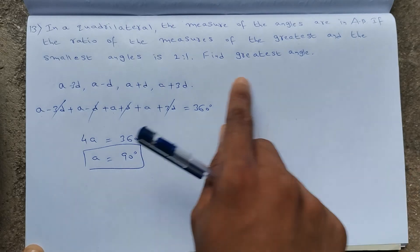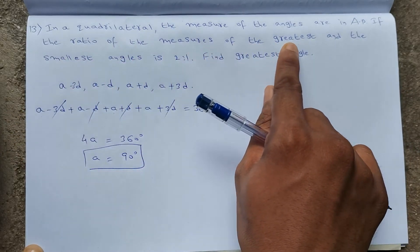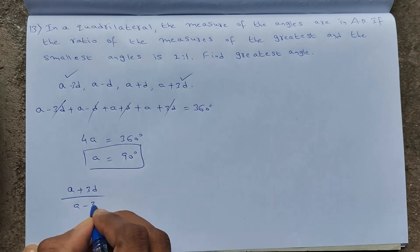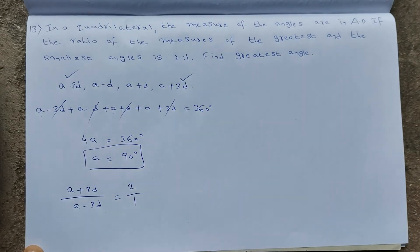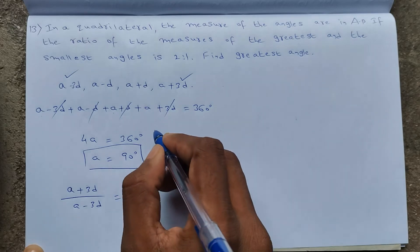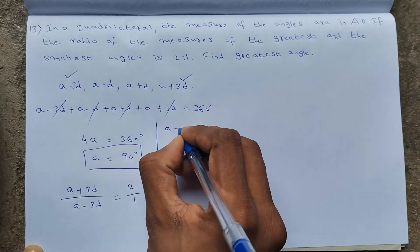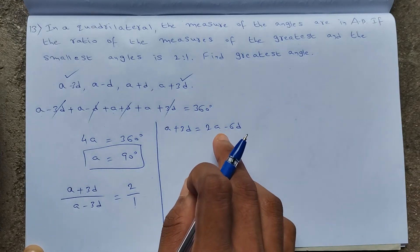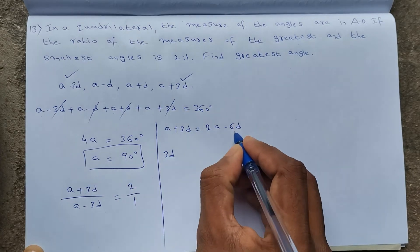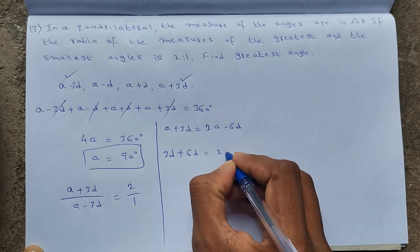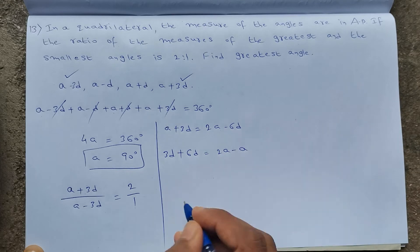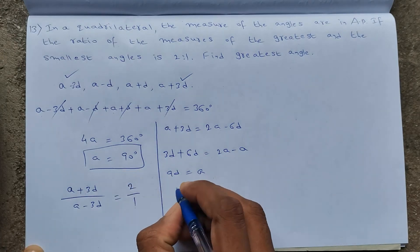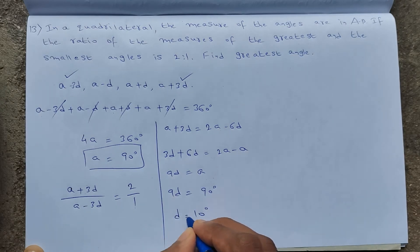Using the second condition — greatest angle / smallest angle = 2/1 — gives (A + 3D)/(A − 3D) = 2/1. Cross-multiplying: A + 3D = 2A − 6D, so 9D = A. Substituting A = 90°: 9D = 90°, so D = 10°.